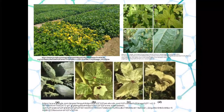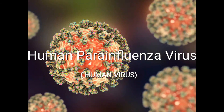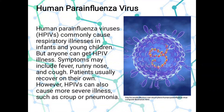And that's a wrap for the plant virus. Let us proceed to the human virus — the human para-influenza virus. Human para-influenza viruses (HPIVs) commonly cause respiratory illnesses in infants and young children, but anyone can get HPIV illness. Symptoms may include fever, runny nose, and cough. Patients usually recover on their own; however, the virus can also cause more severe illness such as croup or pneumonia, making it quite risky.